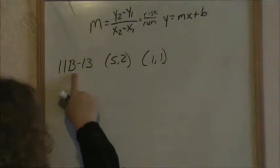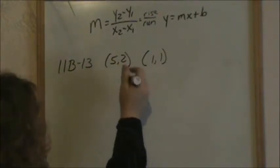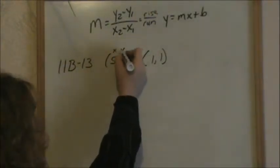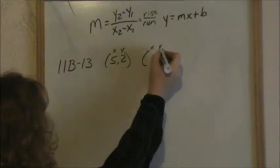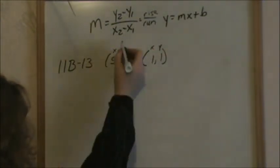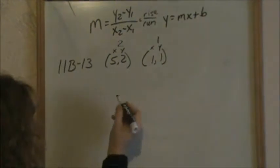So now going to 11b13, we're given these two points. They each have an x and y value, and then we're going to say that this is point 2 and this is point 1.